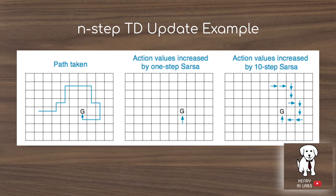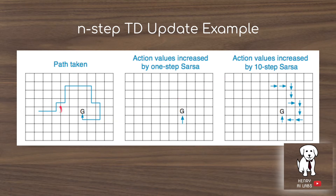The maze navigation example illustrates differences between one-step SARSA and 10-step SARSA. In one-step SARSA, only the immediate predecessor state of the goal receives a value update upon reaching the goal. In 10-step SARSA, all intermediate states along the path are updated upon reaching goal state G.